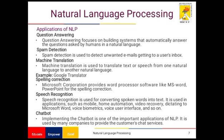Then, applications of NLP. The first is question and answering: it focuses on building systems that automatically answer questions asked by humans in natural language — for example, Alexa. The second is spam detection, which is used to detect unwanted emails getting to the user's inbox. The third is machine translation, used to translate text or speech from one natural language to another — for example, Google Translator. The fourth is spelling correction: Microsoft Corporation provides word processor software like MS Word and PowerPoint for spelling correction.